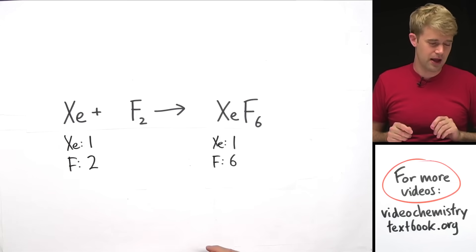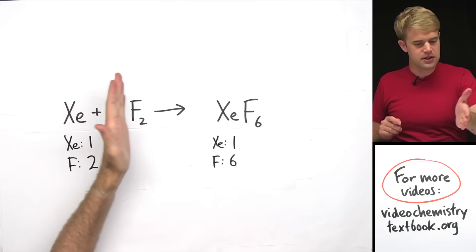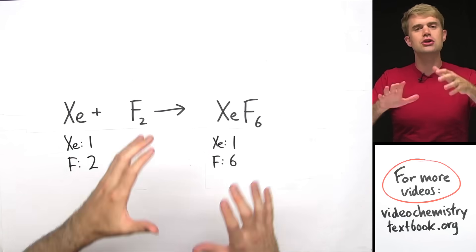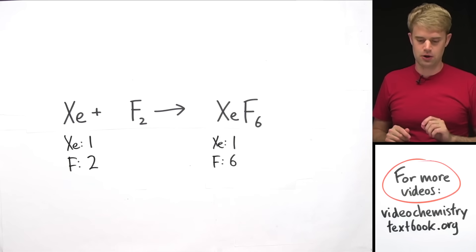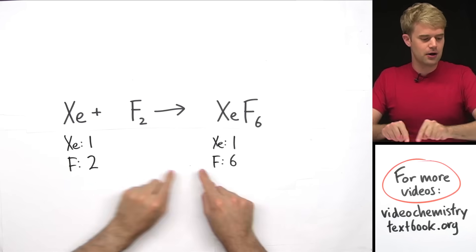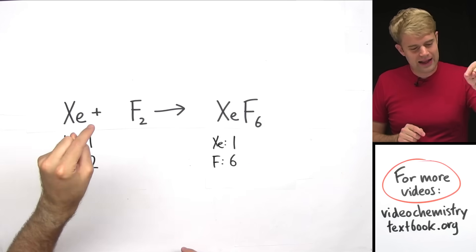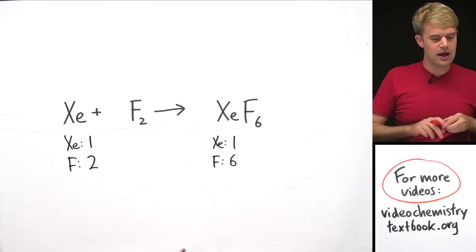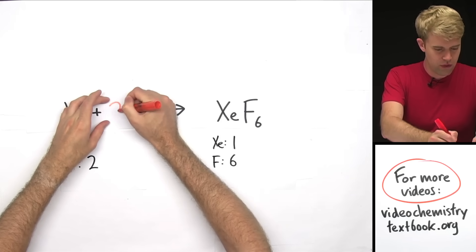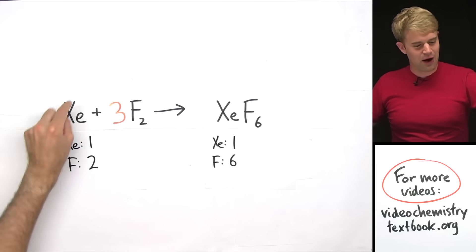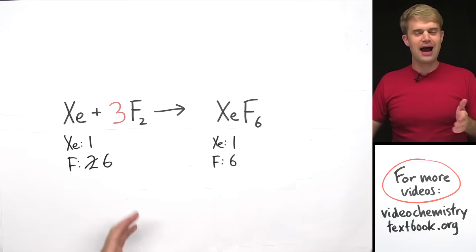In order to balance it, I've got to add coefficients in front of one or more of these elements and compounds to change the number of atoms on the different sides of the equation. I've got six fluorines here but two here, so I need more fluorines on the left side. If I put a three in front of the F₂, three times two gives me six fluorines, and now they balance.